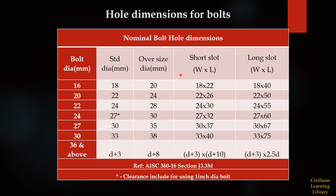We also use short slot holes in structures — slotted in any one direction, not both. Those values are listed here. For 16mm diameter, the value is 18 by 22mm. For 20mm diameter, 22 by 26mm. The width of the hole is the standard hole diameter — for a 16mm bolt the standard is 18mm, so the width is 18mm — but in the length direction it extends, so for 16mm the length goes to 22mm. These are the values for short slot holes.